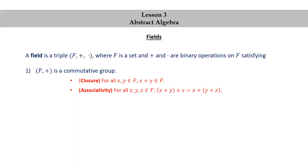Associativity: for all x, y, z in F, (x + y) + z = x + (y + z). Commutativity: for all x, y in F, x + y = y + x.